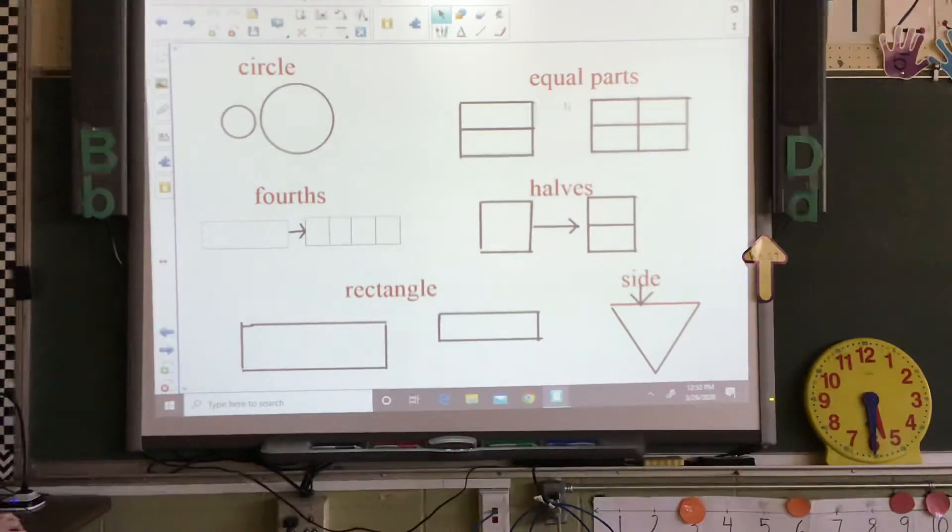Let's go over to this one and it says equal parts. So you have this shape which is a rectangle but it's divided in the middle and both sides of it are the same size. And then we have another shape and it's divided into four equal parts.